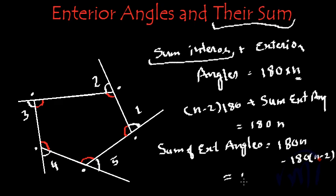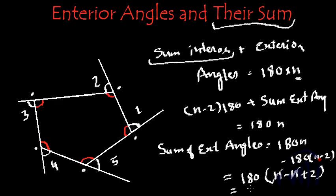From here, the sum of exterior angles equals 180n minus 180 multiplied by (n minus 2), which can be written as 180 multiplied by n minus (n minus 2), which equals 180 multiplied by (n minus n plus 2). The n and minus n cancel, and 180 multiplied by 2 is 360 degrees. So the sum of exterior angles of any polygon is equal to 360 degrees.